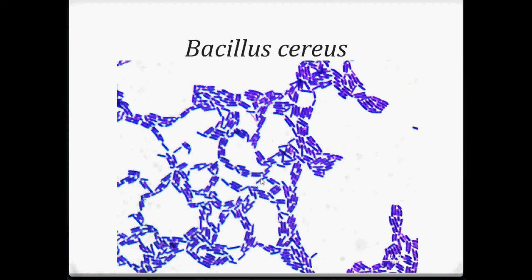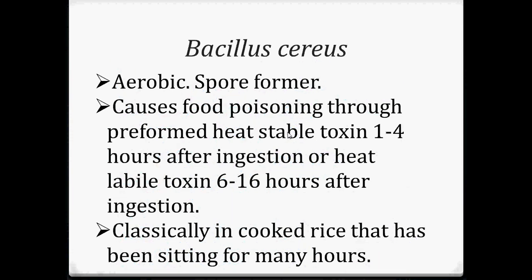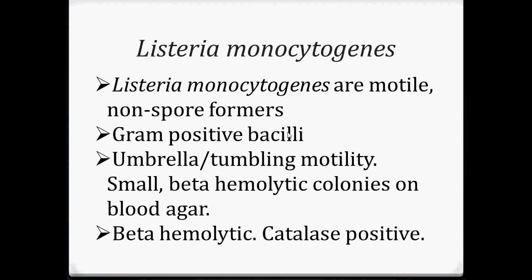Bacillus cereus under microscopic view. Bacillus cereus are aerobic spore formers that cause food poisoning through a preformed heat-stable toxin one to four hours after ingestion, or a heat-labile toxin six to sixteen hours after ingestion, classically in cooked rice that has been sitting for many hours.